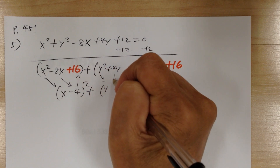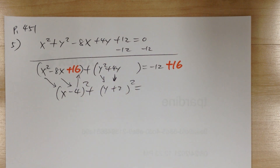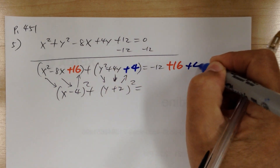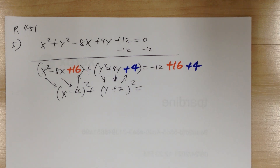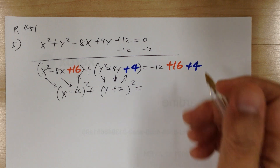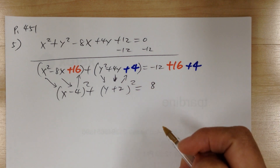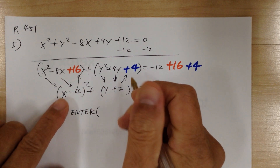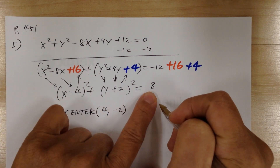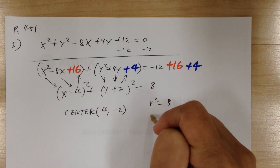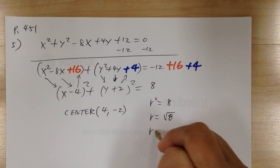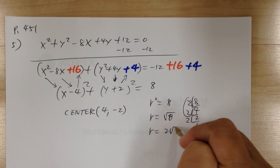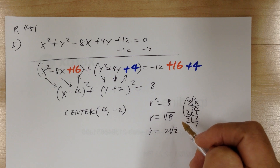From the y squared plus 4y term, take half to get plus 2, then 2 squared gives plus 4 — so add plus 4 on both sides. The total on the right becomes negative 12 plus 16 plus 4 equals 8. The center is at 4, negative 2. This is r squared, so r squared equals 8, and r equals square root of 8, which simplifies to 2 square root of 2. Answer A.